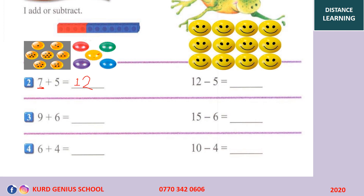But what if we subtract 5 from 12? We say 12 minus 5. We have 12 balls here. We minus 5, so we cross out — this time we do not add, but we cross out some balls: 1, 2, 3, 4, and 5. We crossed out 5 of them. So how many balls are left? 1, 2, 3, 4, 5, 6, 7. So 12 minus 5 equals 7.